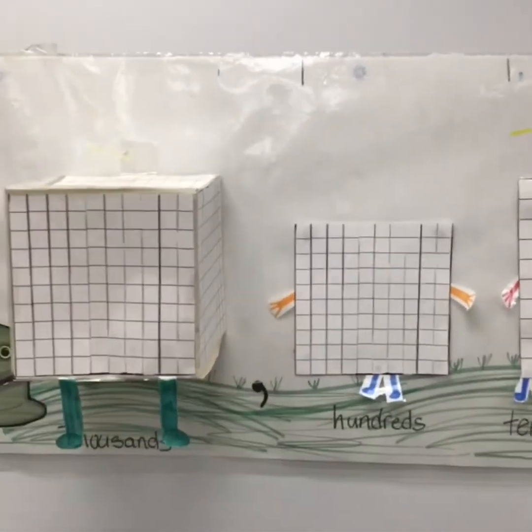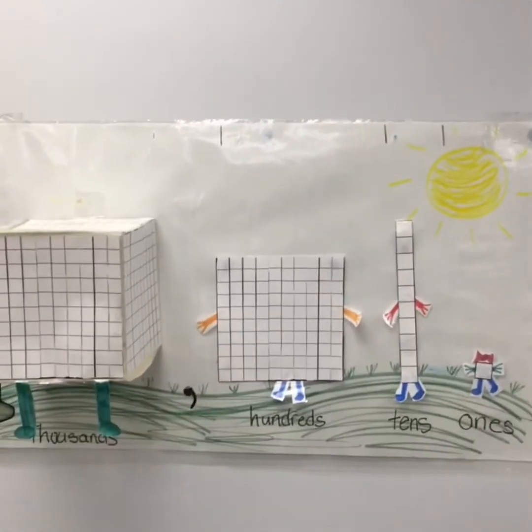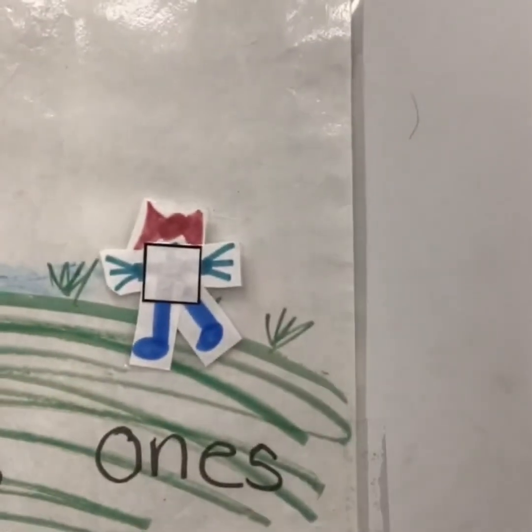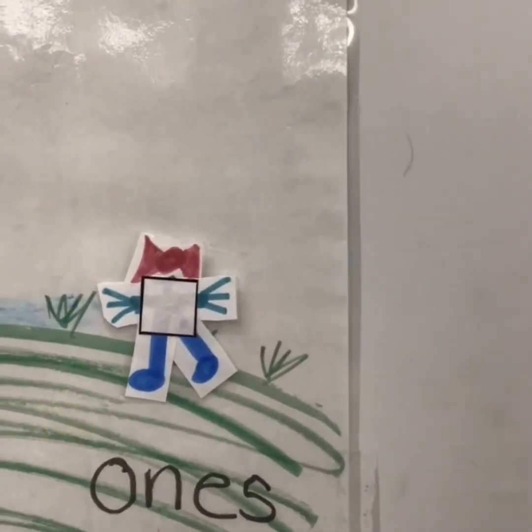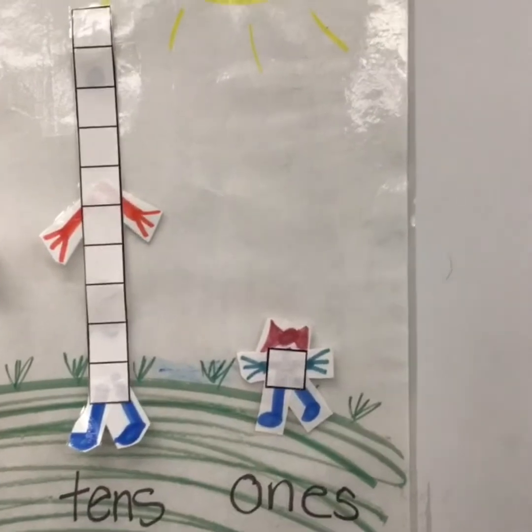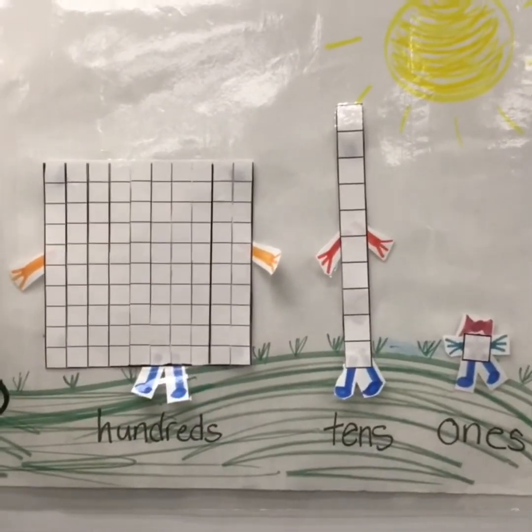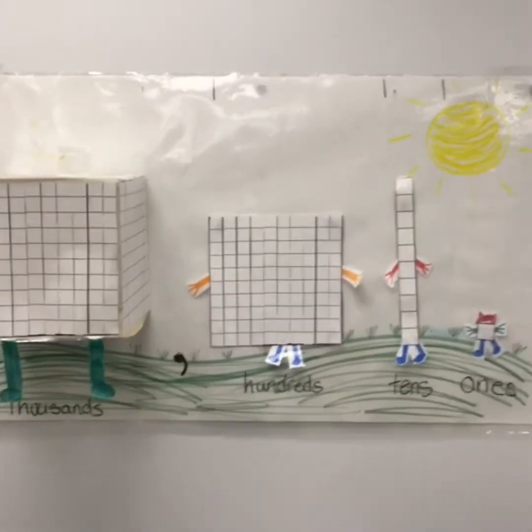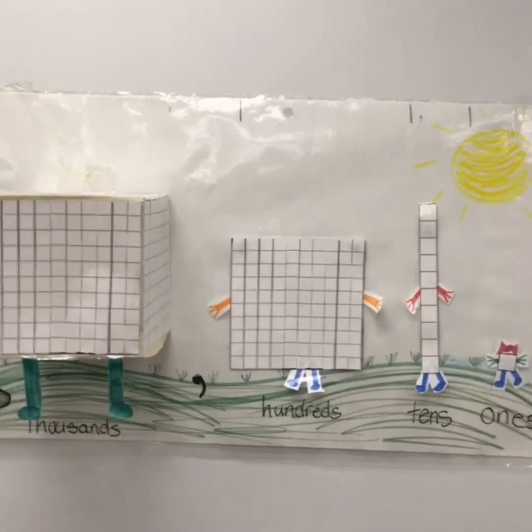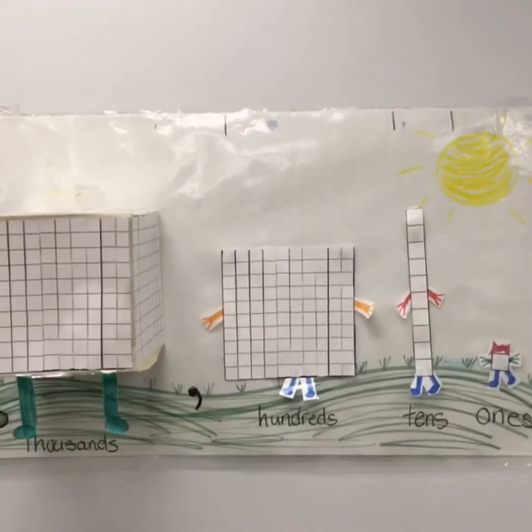And this is our place value family. They all protect each other. So remember the order of the place value family. If there's only one person in the family or we say one digit, that's the baby. That's the ones. And then the tens. If there are three people that showed up in the family or three digits, we say ones, tens, and hundreds. And if there's four people in the family or four digits, we say ones, tens, hundreds, and thousands. And guess what? There's even more people in the family. There's aunts and uncles and cousins. We're not going to talk about them today. But the family even gets bigger and bigger.